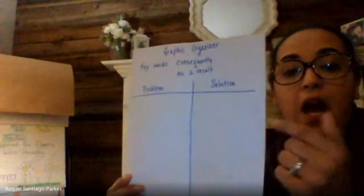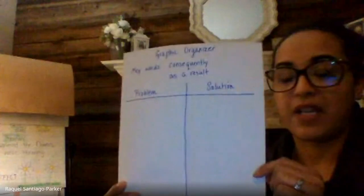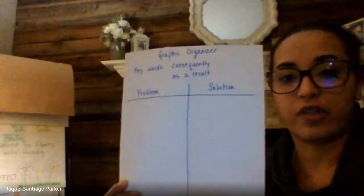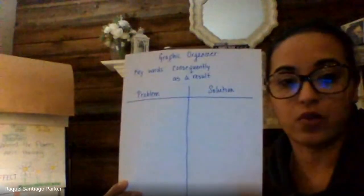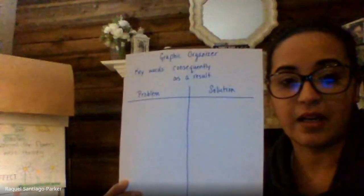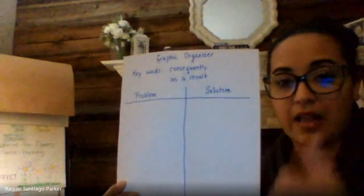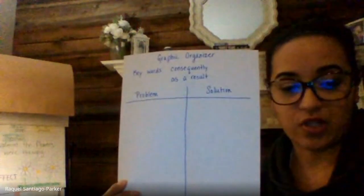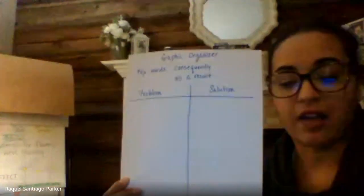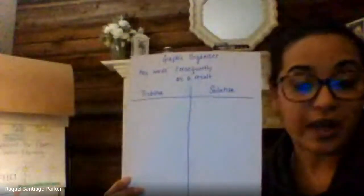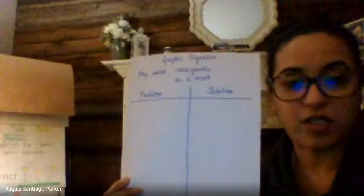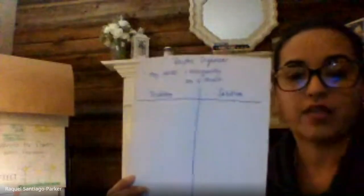This is just a thought — take a piece of paper, fold it in half, create 'problem' on one side and 'solution' on the other side, and there you have your ready-made graphic organizer to help you organize your thoughts as you read.